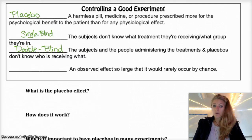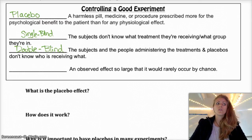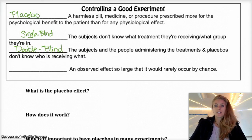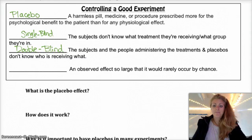Last but not least, we have statistically significant, which basically means that the observed effect you see in an experiment or a study is so large or so extreme that it would not occur by chance very often. For example, say I wanted to do an experiment on whether giving coffee to my students before class affected their ability to focus in class.